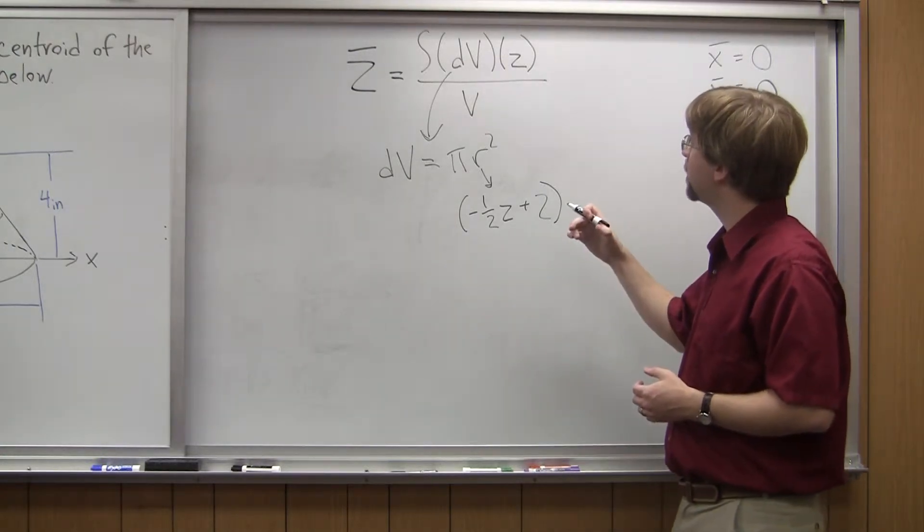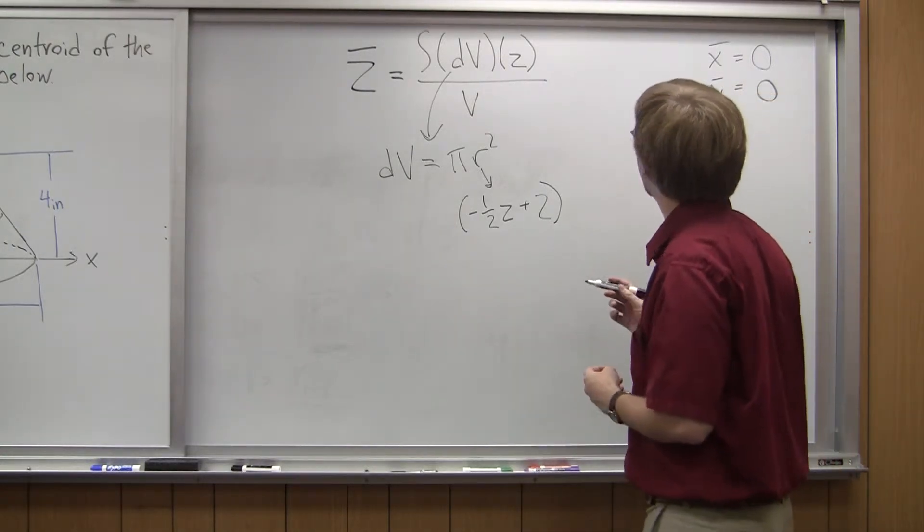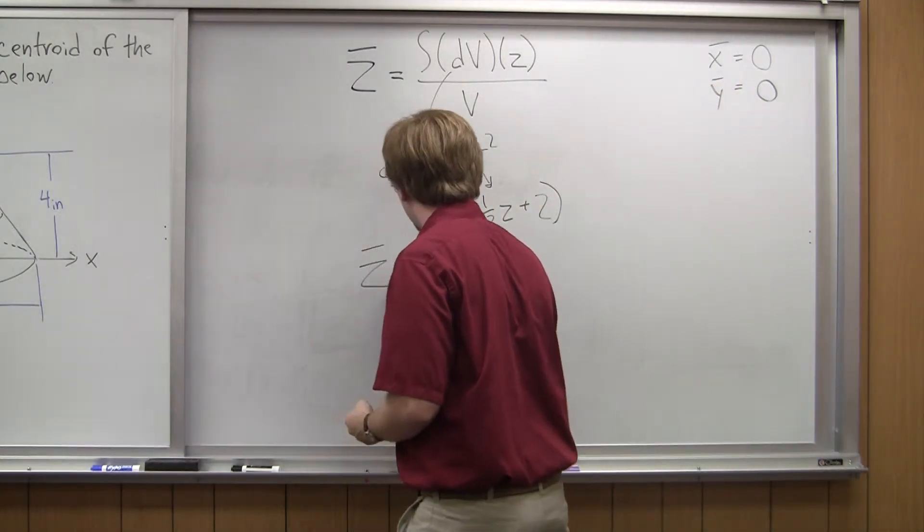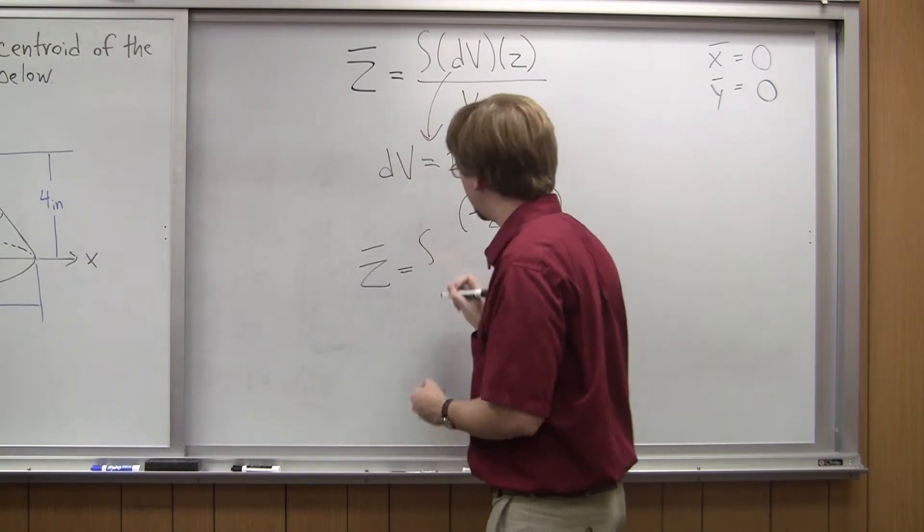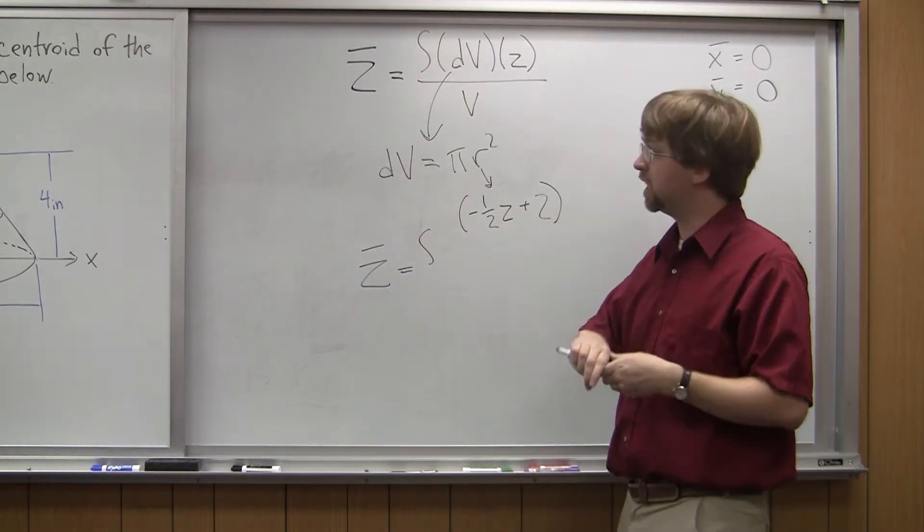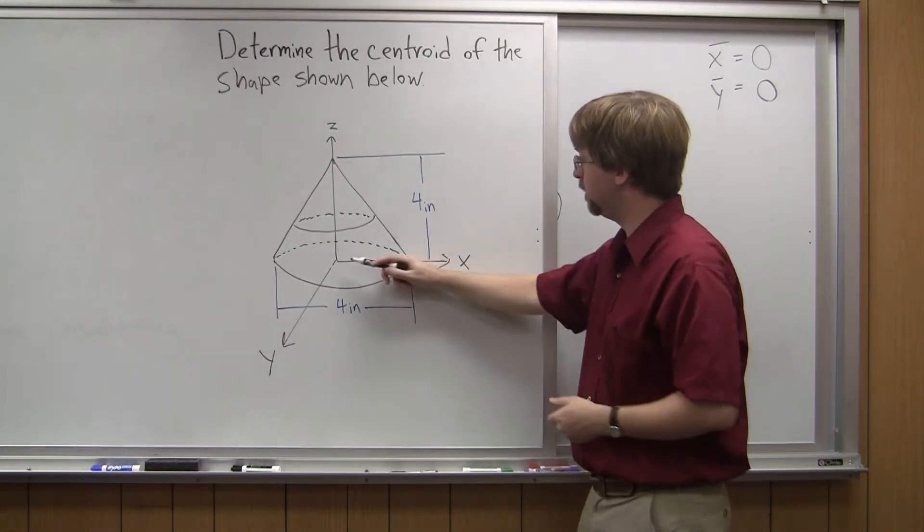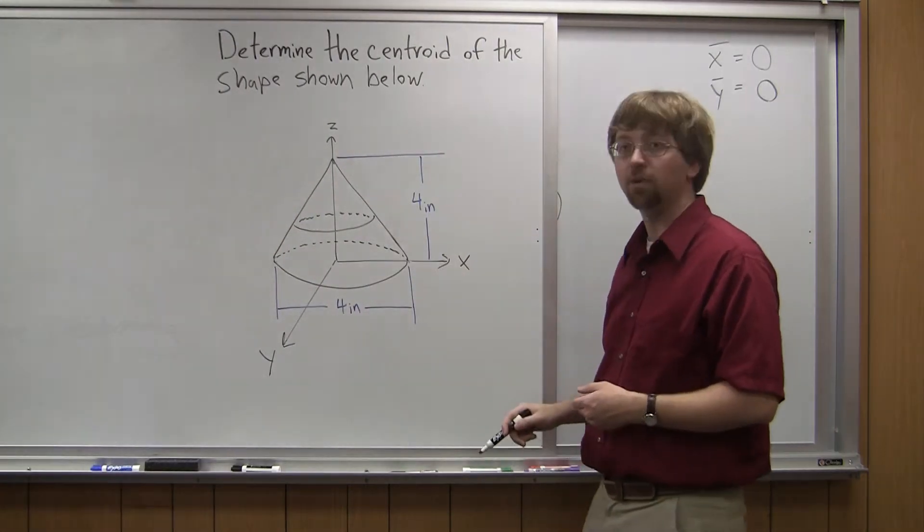All right. So now I've got this. I can plug this whole thing back into my equation. And I'm going to have z-bar, and I'm taking the integral from the bottom to the top. So looking in the z direction, I'm going from z equals zero up to z equals four.